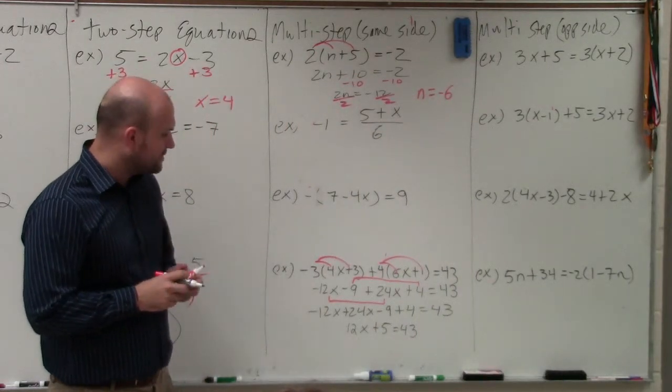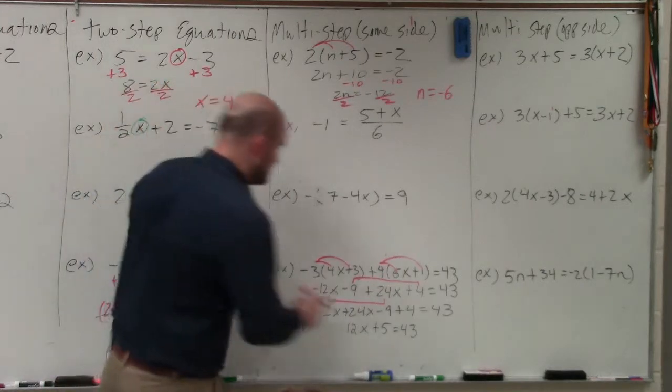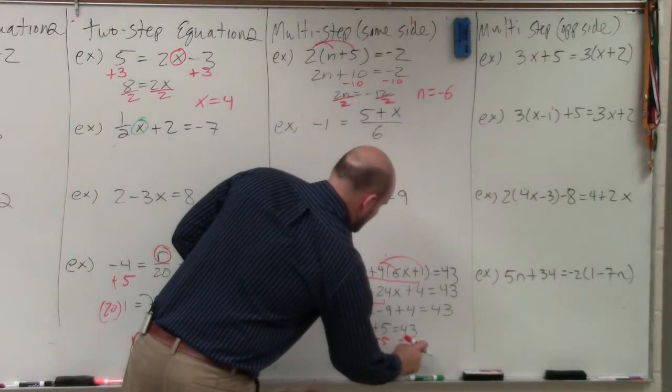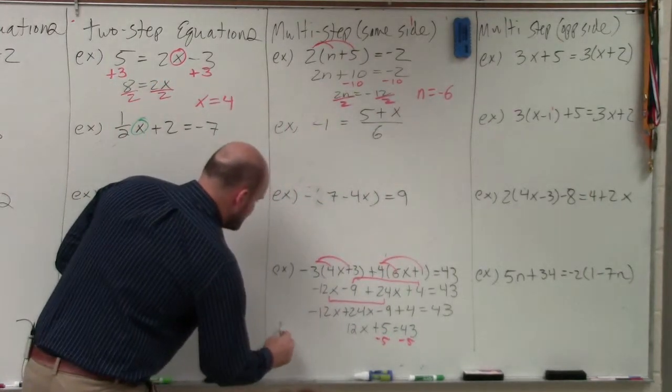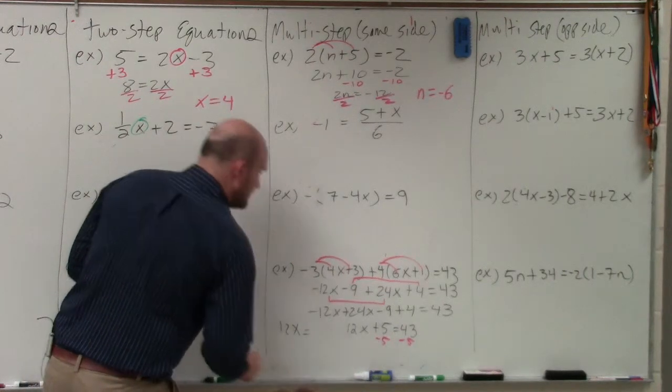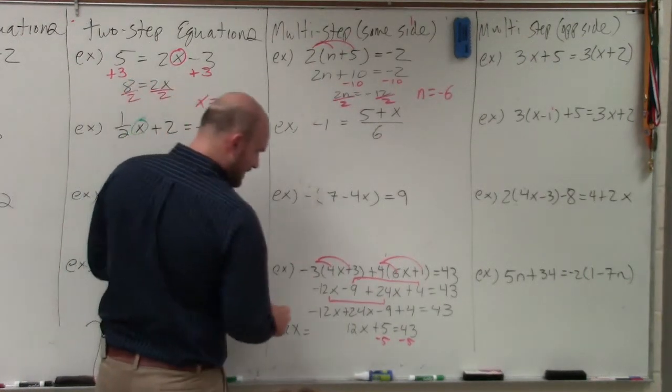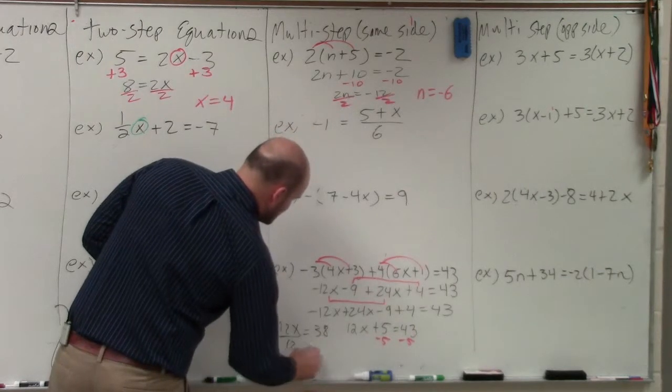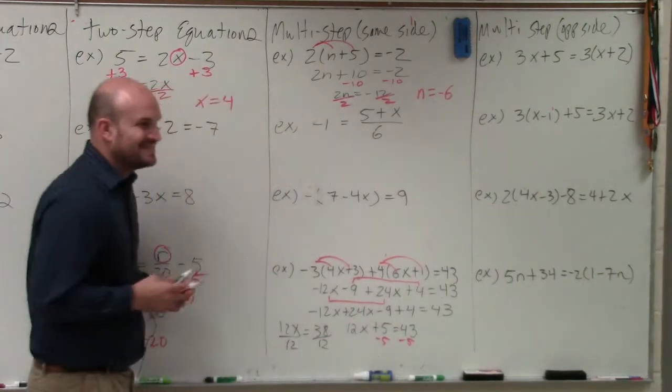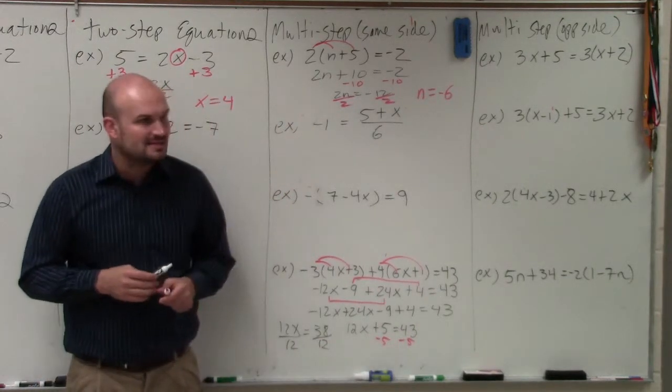OK. And then we just go ahead and solve. So I'll subtract 5, subtract 5. And I get 12x is going to equal 38. Divide by 12, divide by 12. 12 does not divide into 38, does it?